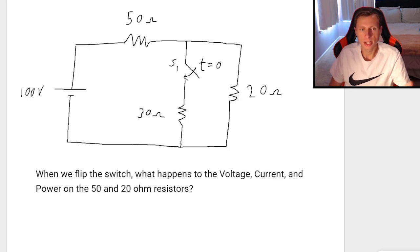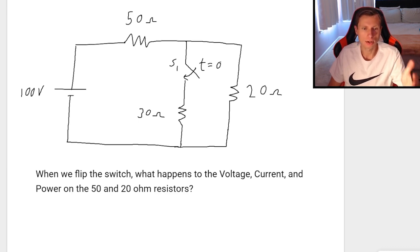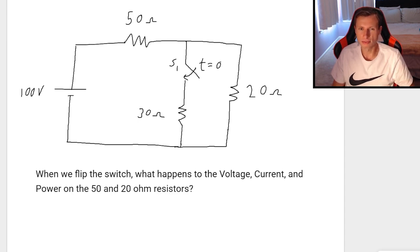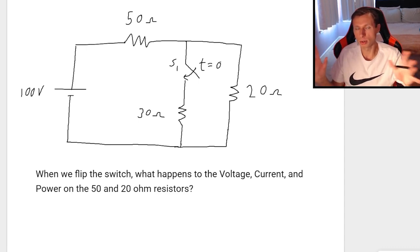The question we often see is: when we flip the switch, what happens to the voltage, current, and power on the 50 and 20 ohm resistors? Usually they will not ask you for all three — voltage, current, and power — but I want to show you how we do that so you'll be prepared for any of the three. So the first piece of advice: whenever you have a circuit with a switch in it, draw both circuits, both with and without the switch flipped.